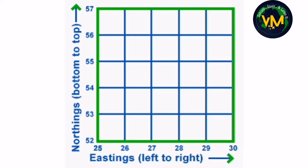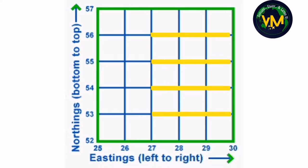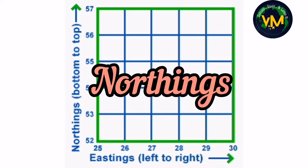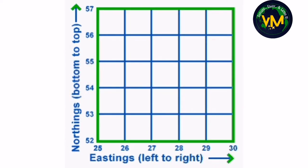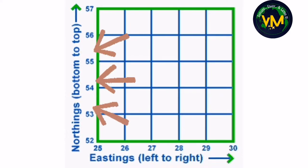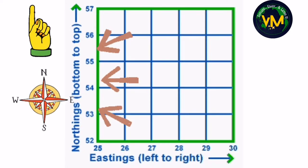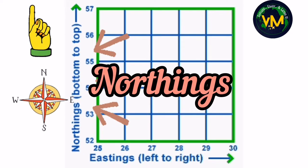Now there is another set of lines drawn horizontally — that is, from east to west. They are called northings. To remember them, look at the numberings: the numbers increase northward from the origin. That is, these lines whose numbers increase towards the north direction are called northings.